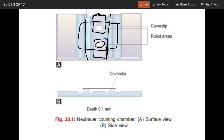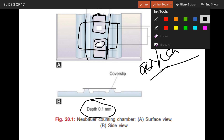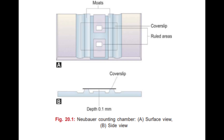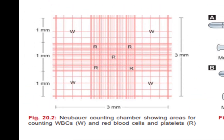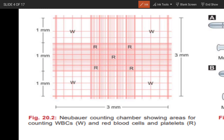The cover slip is kept such that both ruled areas are under it. The ruled area has length and breadth — two dimensions — but adding the cover slip gives it volume because depth is added. The depth added is 0.1 mm, so the volume of one large square on the corner will be 0.1 mm cube.